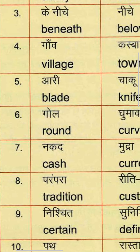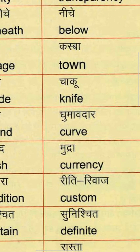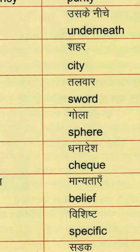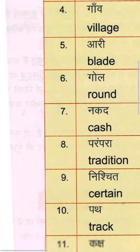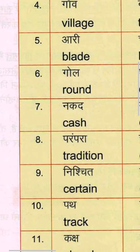Fourth group: Gaon, which is Village. Town — T-O-W-N, meaning Kasba or small town. And City — C-I-T-Y, meaning Shahar.